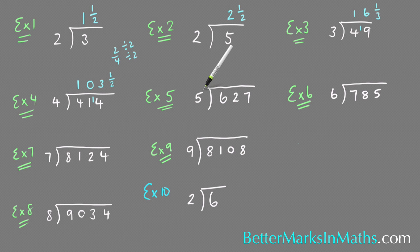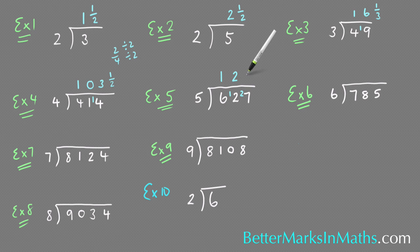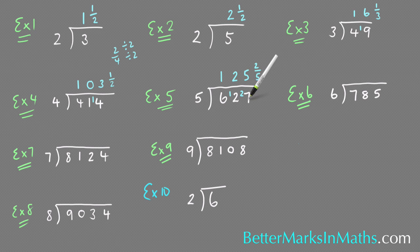Example 5: how many 5s in 627? How many 5s in 6? There's 1 with 1 left over. How many 5s in 12? There's 2 with 2 left over. How many 5s in 27? There's 5 with a remainder of 2, so it's going to be 2 over 5. So how many 5s in 627? There's 125 and 2 fifths.